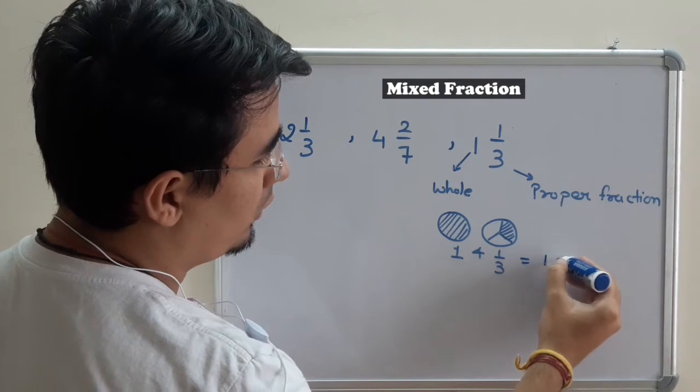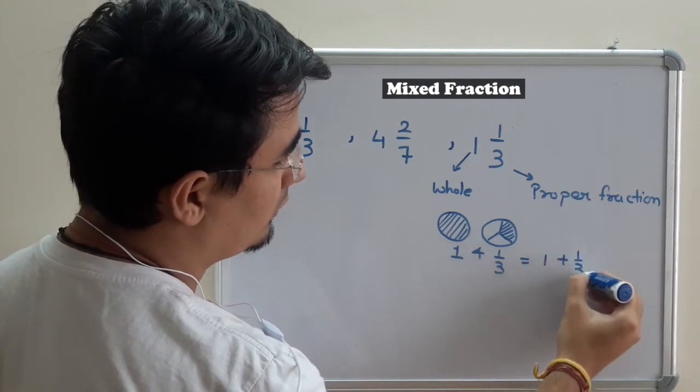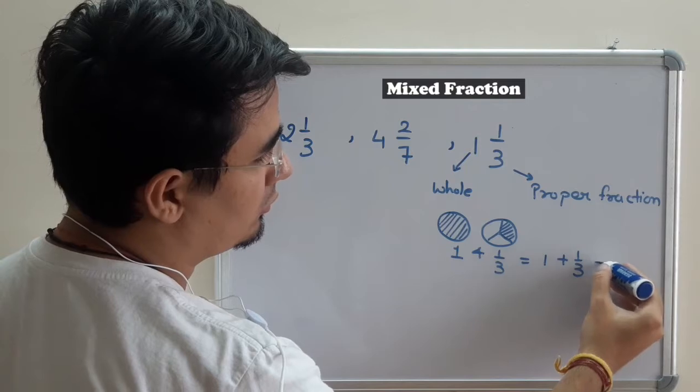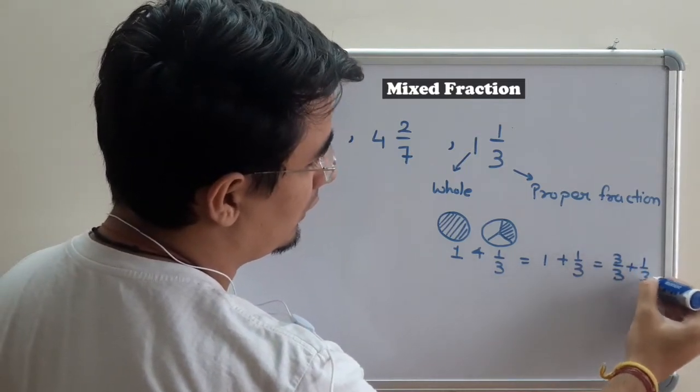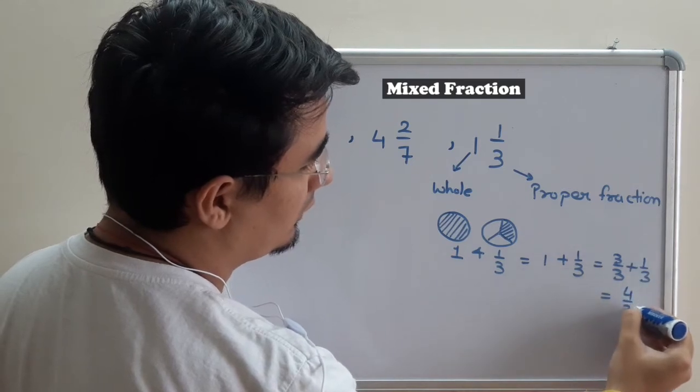It means 1 plus 1/3. If I take LCM, I can solve: 3/3 plus 1/3, that is 4/3.